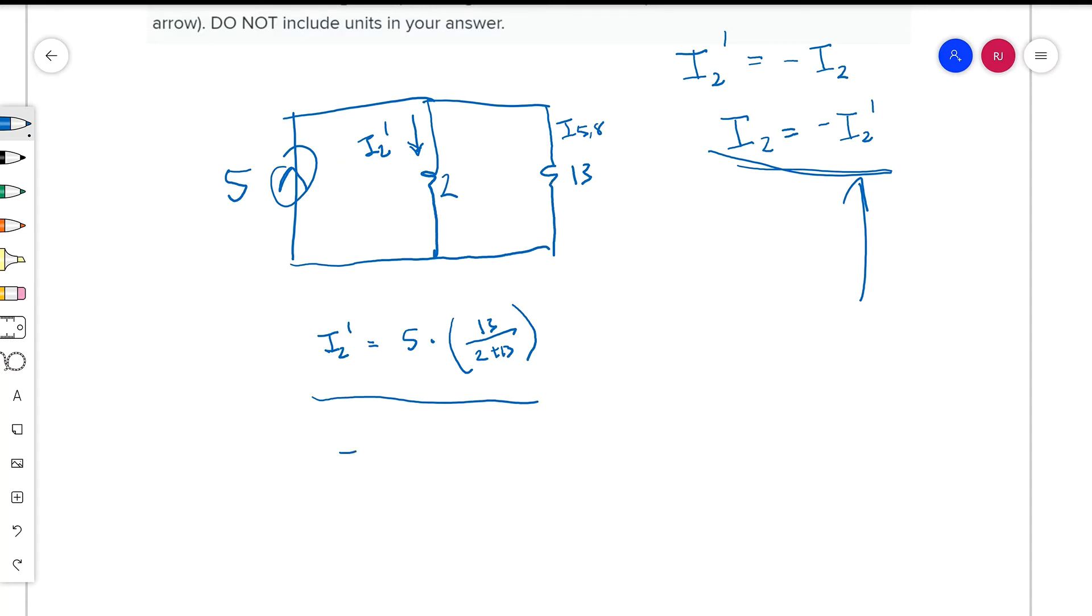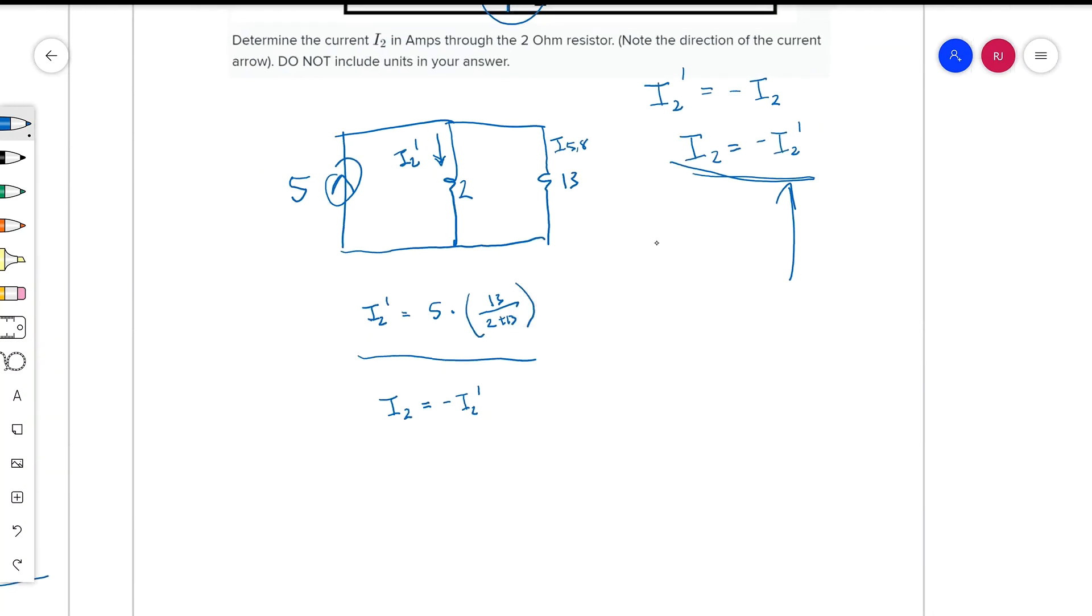And then if you want to get your answer, I2 is equal to negative I2 prime. And then you can simplify this later. And that would conclude this problem.